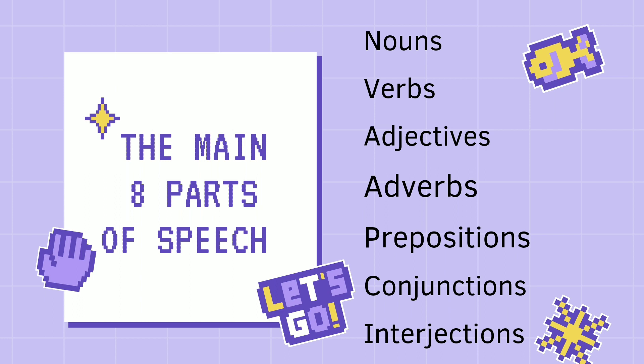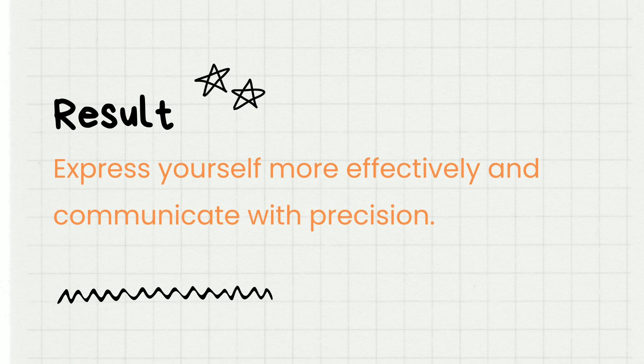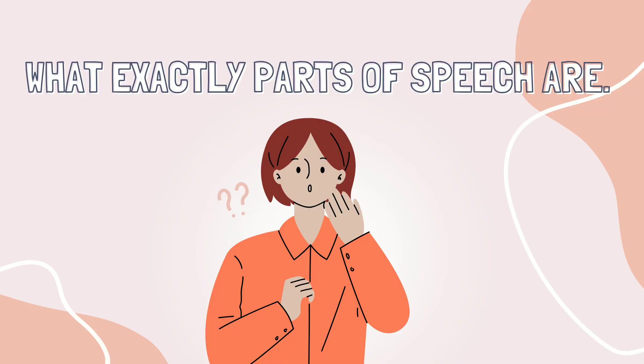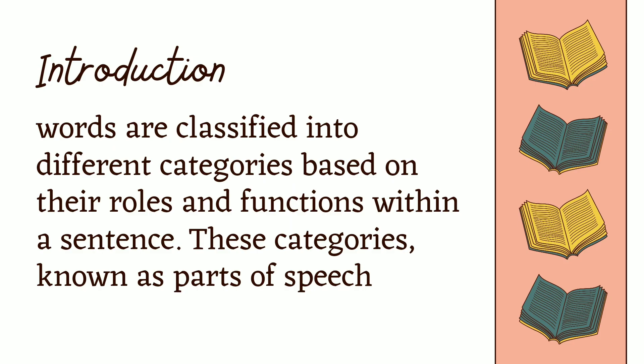By understanding the roles and functions of nouns, verbs, adjectives, adverbs, prepositions, conjunctions, and interjections, you'll be better equipped to express yourself effectively and communicate with precision. Before we get into the nitty-gritty details, let's establish what parts of speech are. In the English language, words are categorized into different groups based on their roles within a sentence. These categories, known as parts of speech, provide a structured framework for comprehending how words collaborate to convey ideas and emotions.